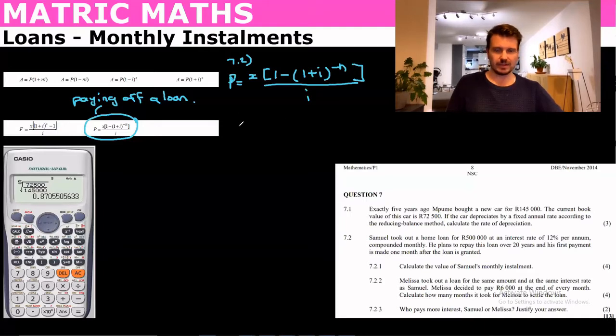Now 500,000 is the value of the loan. P equals 500,000, the loan that you're paying off. They tell us that i is 12% and our n is going to be monthly, so it's going to be 20 years times 12. And so we can just put that into the formula.